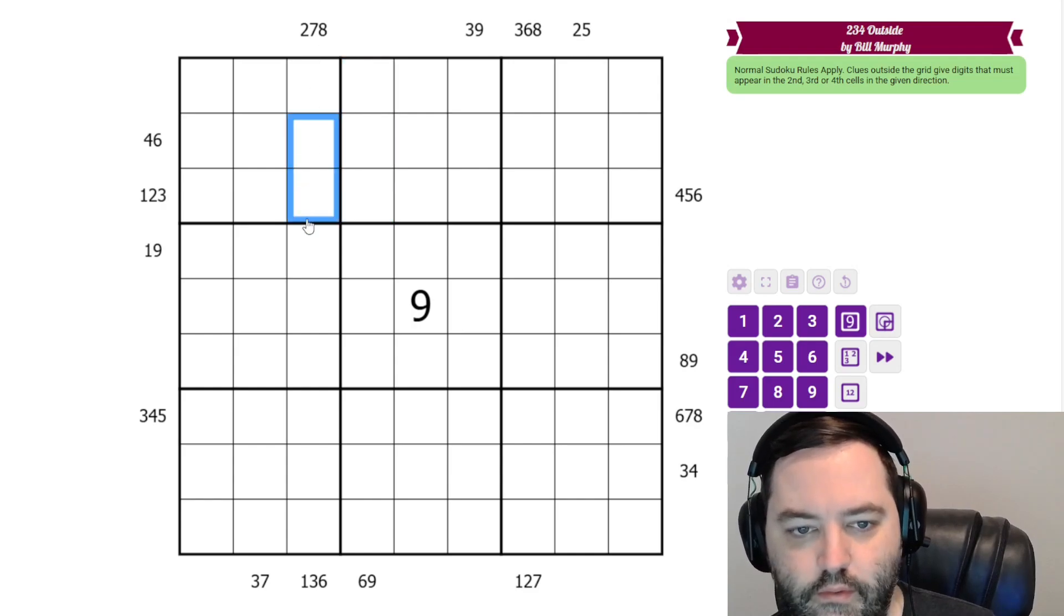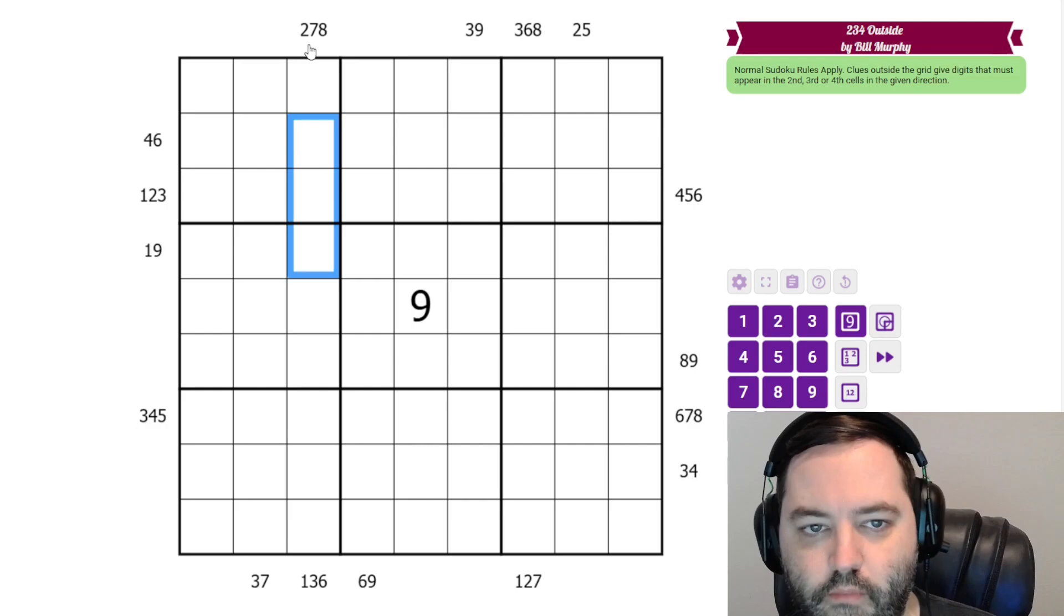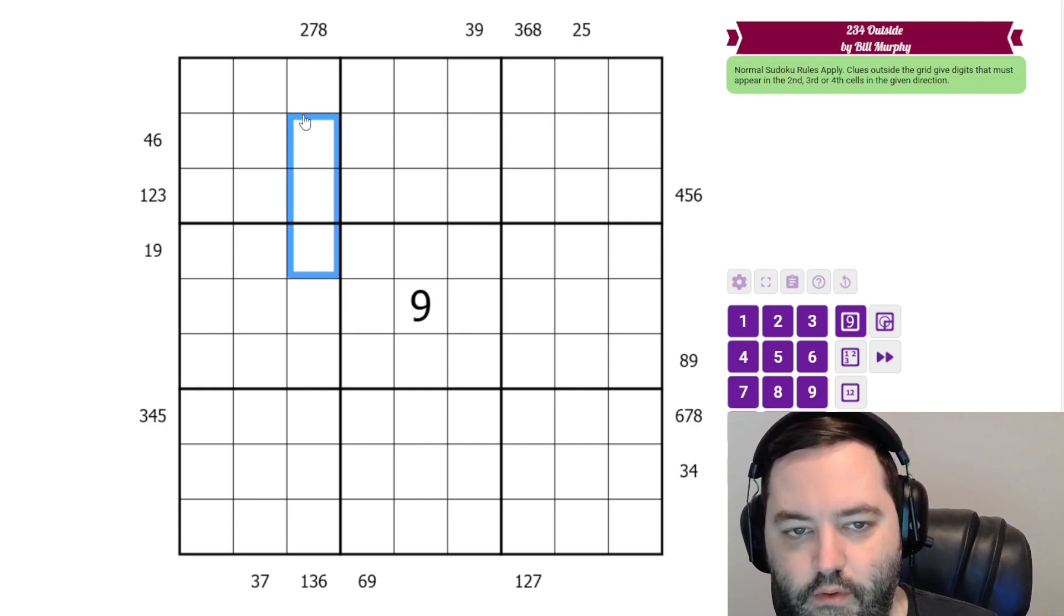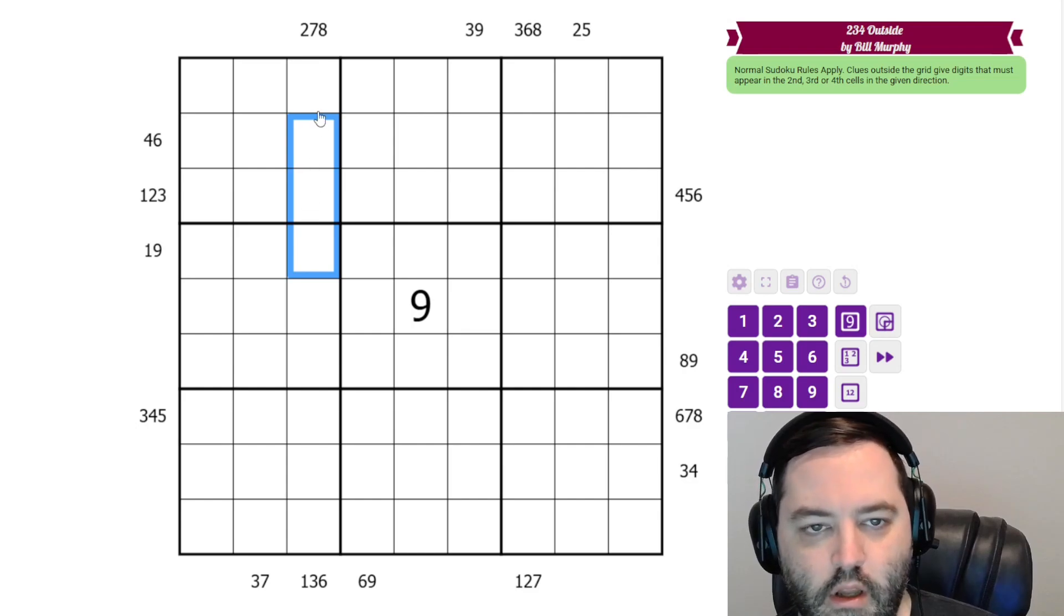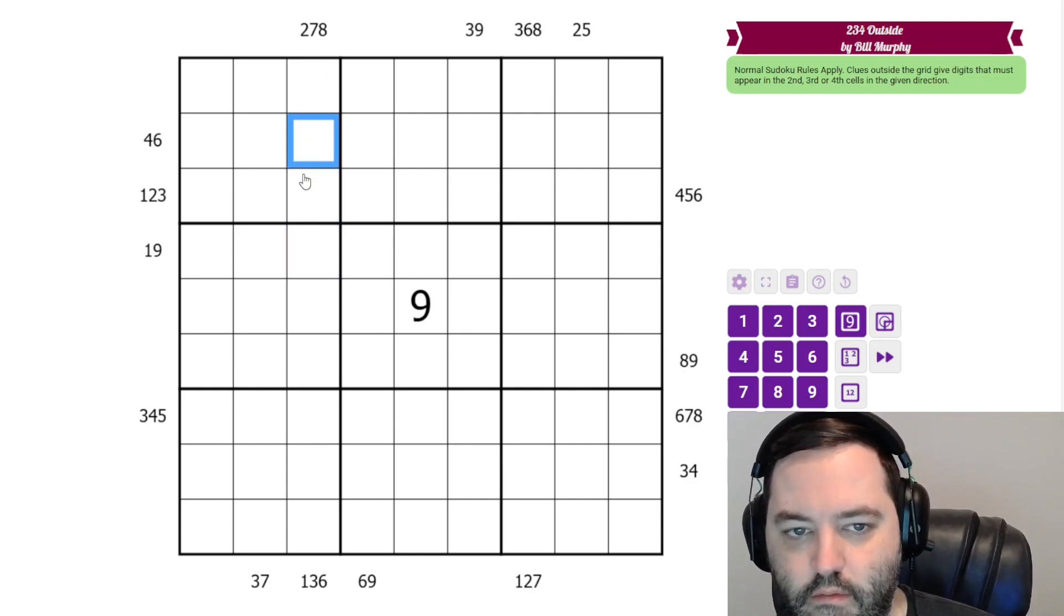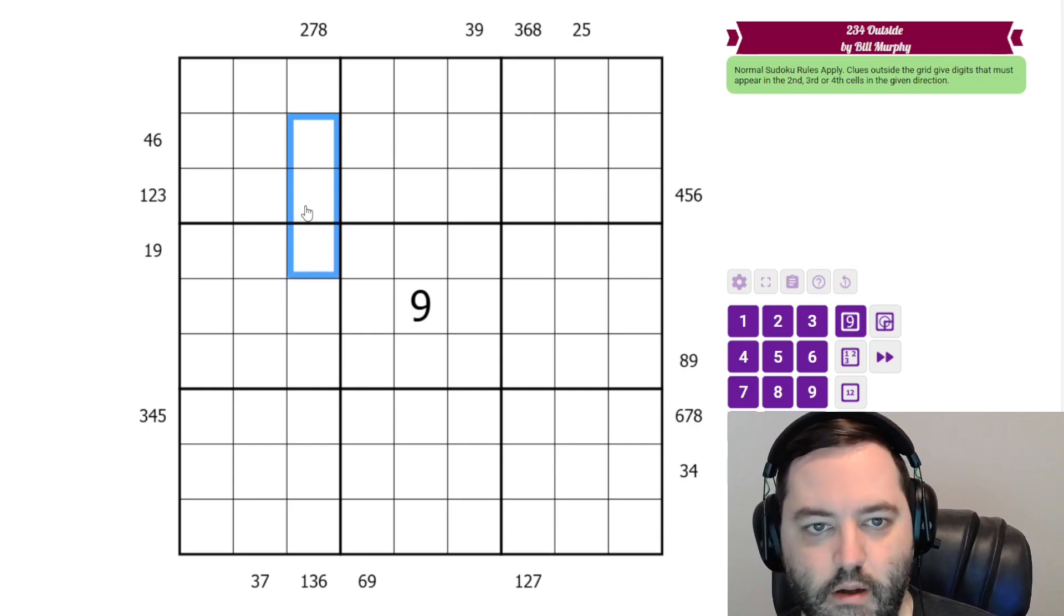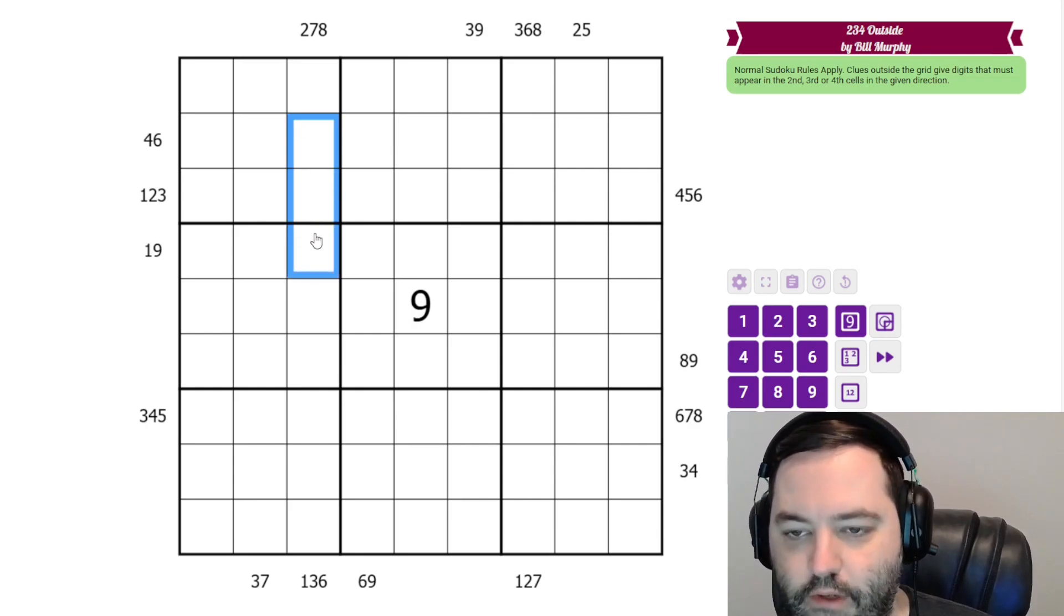Normal outside is digits in the clues outside the grid must appear in the first three cells away from the clue. But since this is 2-3-4, this time it's the second, third, or fourth cells away from the clue. So the 2-7-8 from this clue must appear in these three cells somewhere. And whenever we have a clue that has three digits, that means we're going to have a triple. So these are 2-7-8 in some order. There's nothing else that can go there.